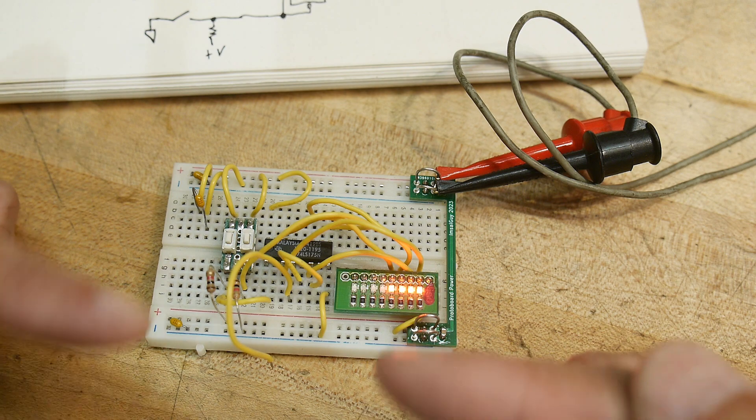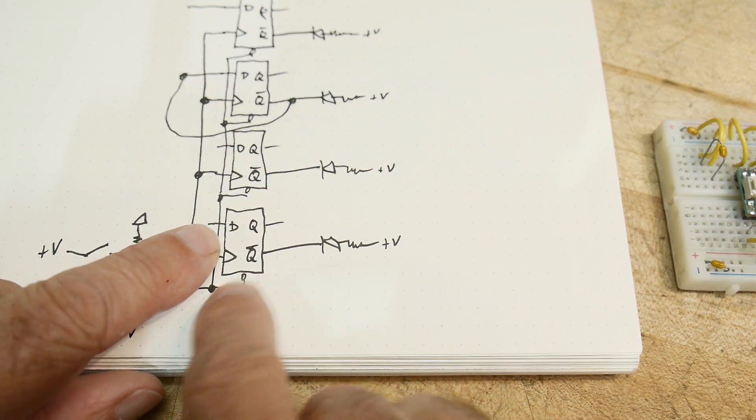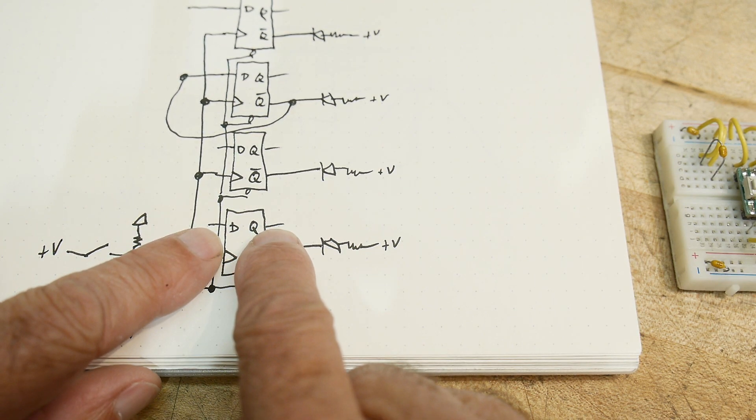If you have a device where you have a clock, remember when you have a rising edge, then D and Q take on the same value. All right.